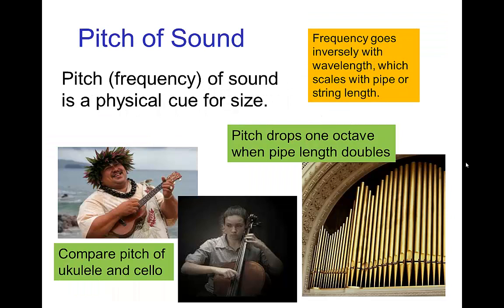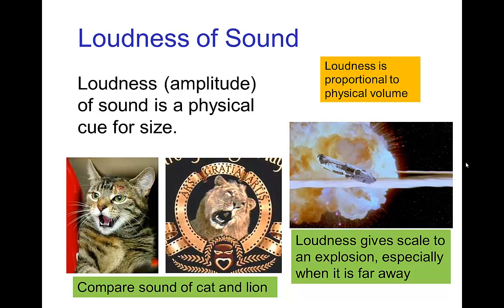The sound that an animal makes — specifically the pitch — is a physical cue for size. Small animals have high-pitched squeaky voices, while large animals have deeper voices. This is because frequency goes inversely with wavelength, and that wavelength scales with the size of the pipe, string, or whatever instrument is creating the sound. In fact, increasing the size by a factor of two changes the pitch by one octave. Loudness is another physical cue for size — a small animal does not have enough volume to produce very loud sounds compared to a larger animal.